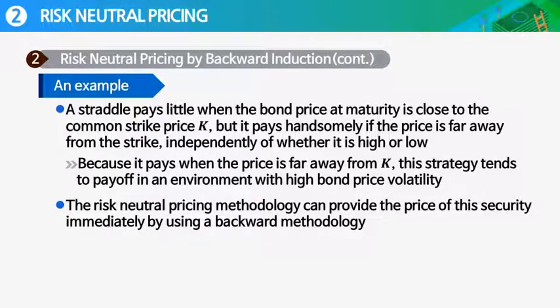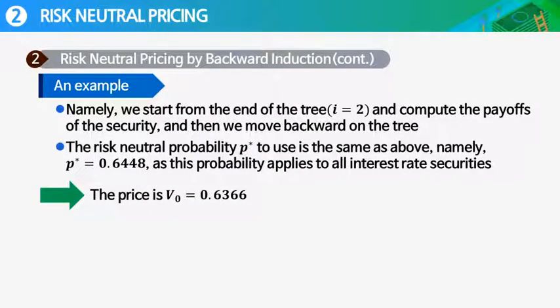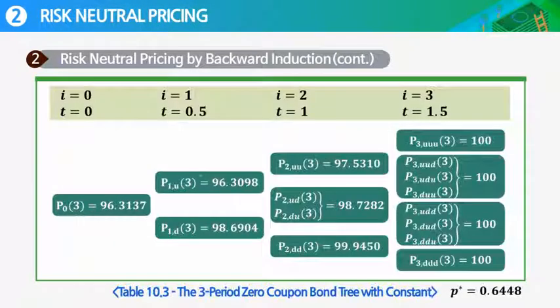The risk-neutral pricing methodology can provide the price of this security immediately by using a backward methodology. Namely, we start from the end of the tree and compute the payoff of the security, and then we move backward on the tree. The risk-neutral probability p-star to use is the same as above, namely p-star equals 0.6448, as this probability applies to all interest rate securities. If we do the iteration, the price is V_0 equals 0.6366. So this is an example, a straddle example.